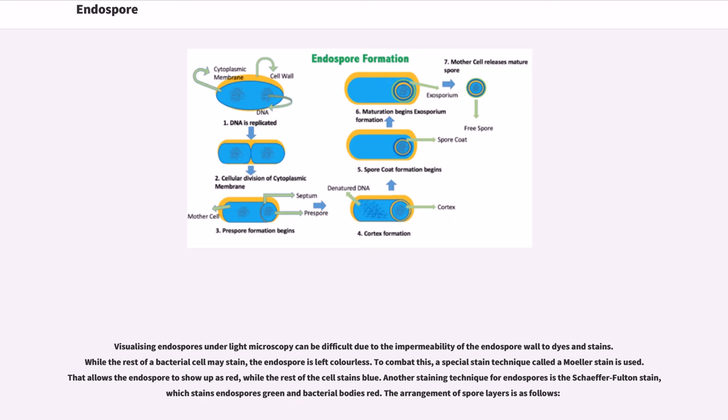Visualizing endospores under light microscopy can be difficult due to the impermeability of the endospore wall to dyes and stains. While the rest of a bacterial cell may stain, the endospore is left colorless. To combat this, a special stain technique called a malachite green stain is used, that allows the endospore to show up as red, while the rest of the cell stains blue. Another staining technique for endospores is the Schaeffer-Fulton stain, which stains endospores green and bacterial bodies red.